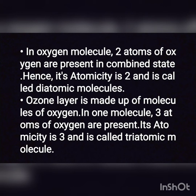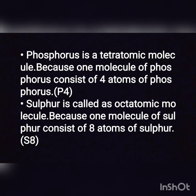You have heard about the ozone layer. The ozone layer is made up of molecules of ozone. In one molecule of ozone (O3), three atoms of oxygen are present, which is why the atomicity of ozone is 3, and it is called a triatomic molecule. Phosphorus is a tetraatomic molecule because one molecule of phosphorus consists of 4 atoms of phosphorus. Sulfur is called an octaatomic molecule because one molecule of sulfur consists of 8 atoms of sulfur. Sulfur can also be called a polyatomic molecule.